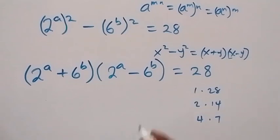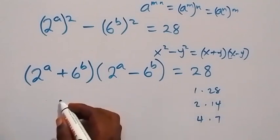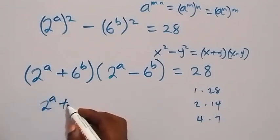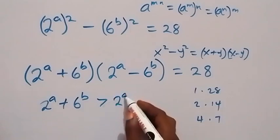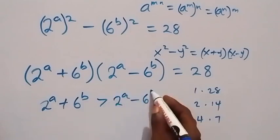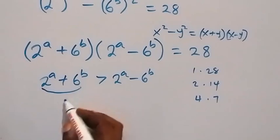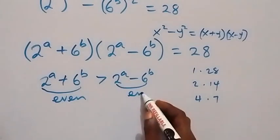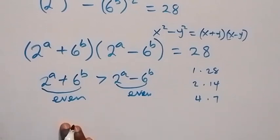Considering these two brackets, the first bracket will be greater than the second one. So 2 raised to the power a plus 6 raised to the power b will be greater than 2 raised to the power a minus 6 raised to the power b. Now this first bracket will be an even number, and this second bracket will also be an even number — so both are even, but the first is greater than the second.